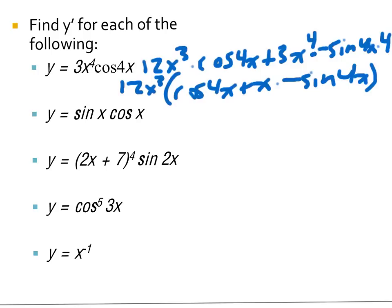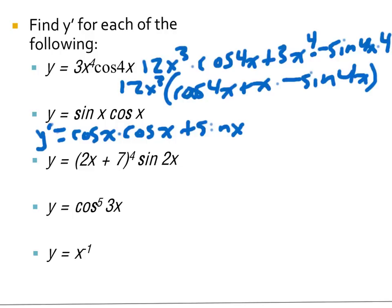The second problem is another product rule problem, where u is sine and v is cosine. So y' would be the derivative of the first, which is cosine x, times the second left alone. Plus, leave the first alone, and the derivative of the second is negative sine of x. Which can just be written as cosine squared x minus sine squared x.